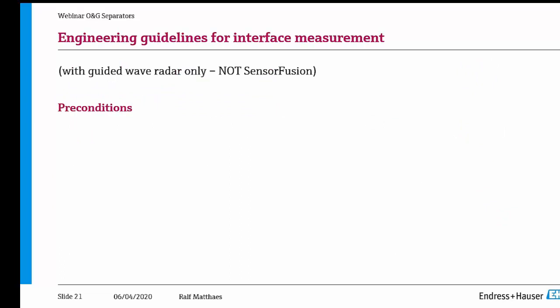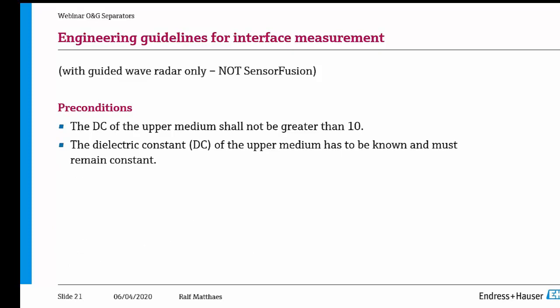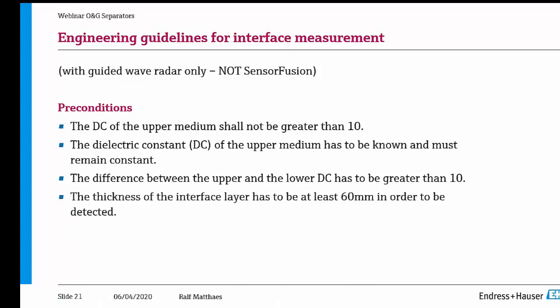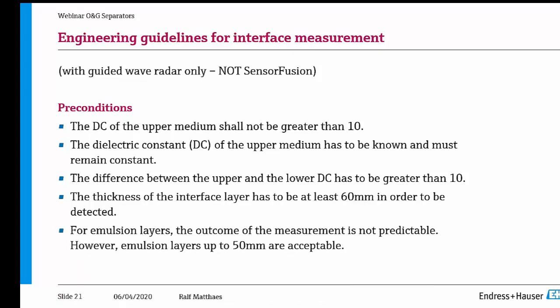The engineering guidelines for interface measurement with guided wave radar only: the dielectric constant of the upper medium should not be greater than 10. The dielectric constant of the upper medium has to be known and must remain constant. The difference between the upper and lower dielectric constant has to be greater than 10. The thickness of the interface layer has to be at least 60 mm to be detected. Emulsion layers up to 50 mm are accepted.